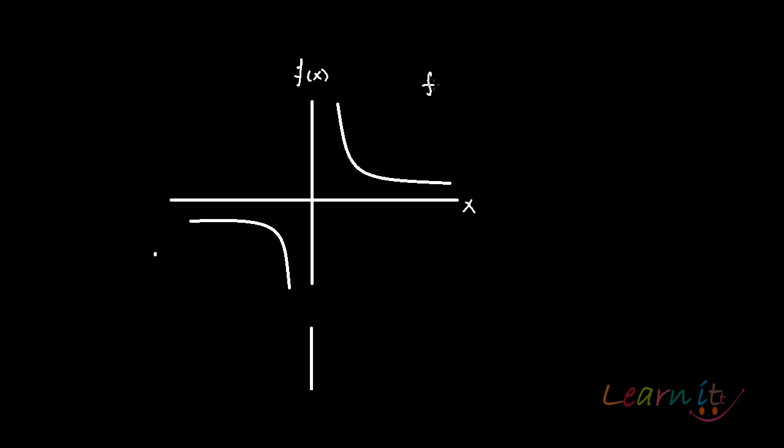It is depicting a function f(x) equals 1 by x. Now this function f is a function that goes from R minus 0 to R minus 0, because you will never have 0 in the range and you can't take 0 in the domain because it will be undefined then.